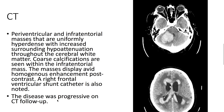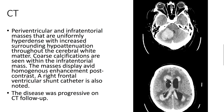On CT, we see periventricular as well as infratentorial masses that are uniformly hyperdense, with increased surrounding hypoattenuation.